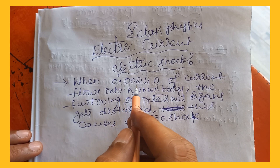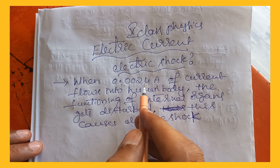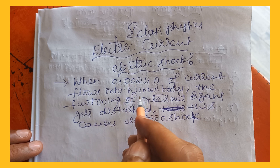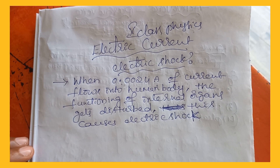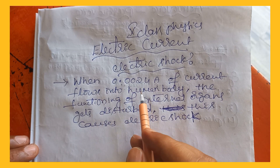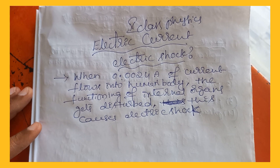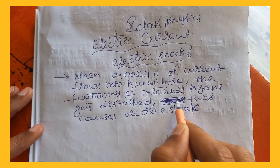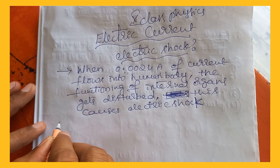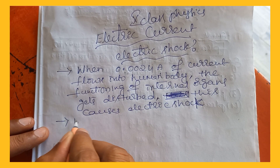When the amount of current that flows into our body is less than 0.0024 amperes, it doesn't disturb the functioning of internal organs. But when this much current or more than this much current goes into our body, the functioning of internal organs gets disturbed and we can feel pain and get other effects, which causes electric shock. So we want to write one more point: electric shock is...